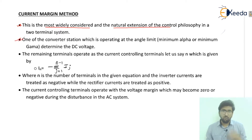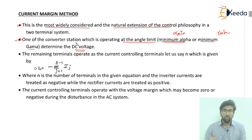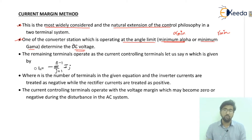One of the converter stations operating at an angle limit determines the DC voltage. The angle limit refers to the minimum alpha (alpha minimum) or the minimum gamma (gamma minimum). If we are talking about the rectifier, it operates at alpha minimum for DC voltage determination. If we are considering the inverter, it operates at gamma minimum to determine the DC voltage value.